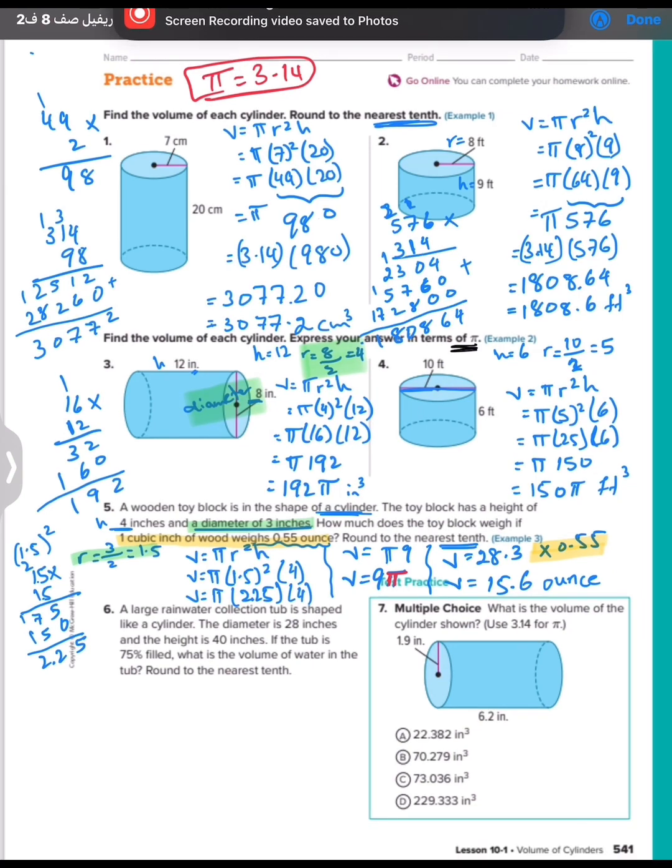Question number six: a large rainwater collection tube is shaped like a cylinder. So we have a cylinder. The diameter is 28. Unless you see diameter, write down r equals 28 divided by 2, it is 14. And the height is 40, so h equals 40. If the tube is filled like that, 75 percent. What is the volume of water?